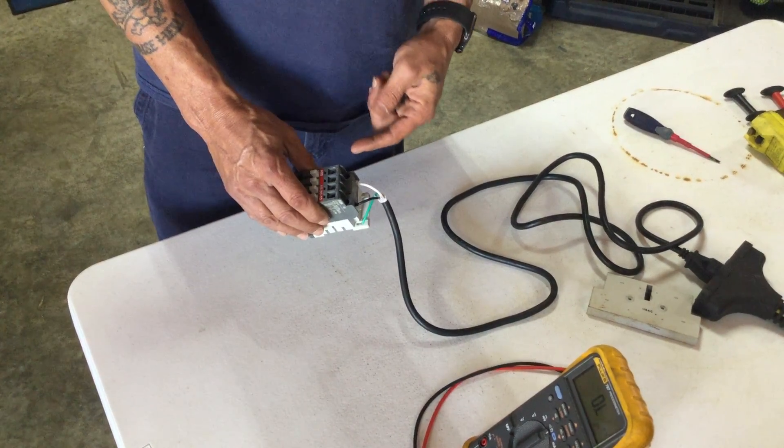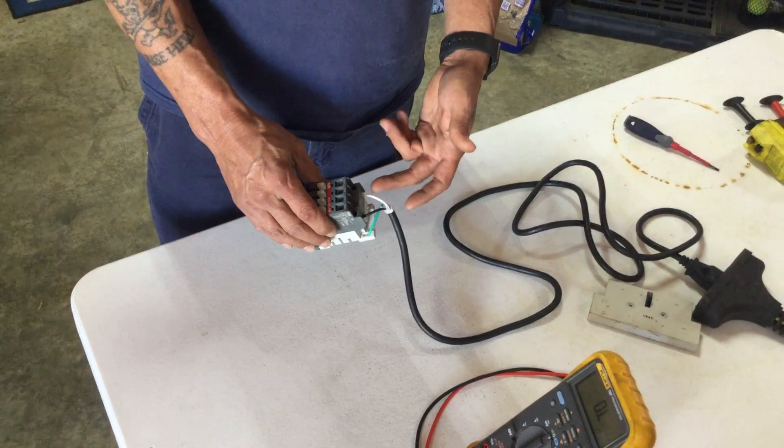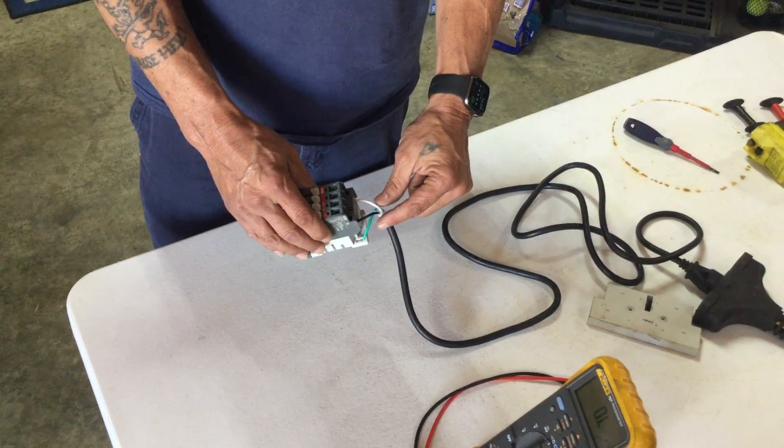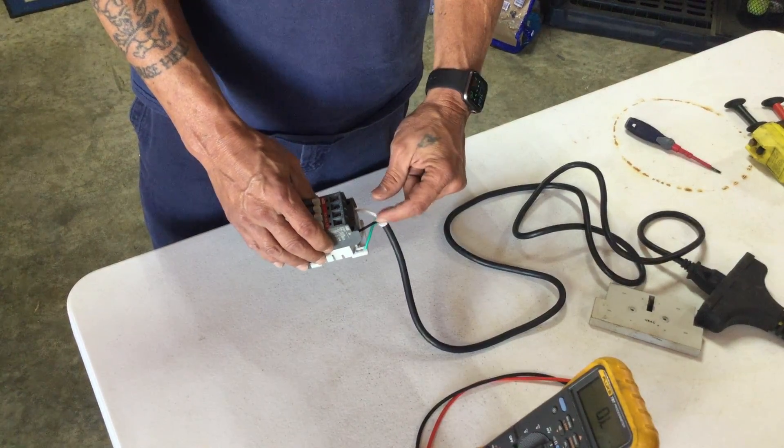What we're going to do now is test the contactor. We've got our power wires hooked up to A1 and A2. It doesn't matter which color goes to which side.